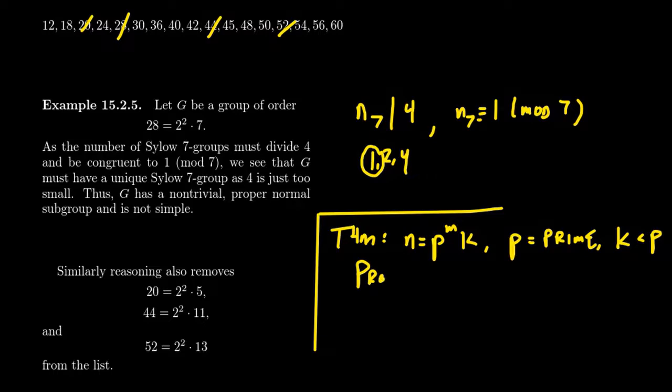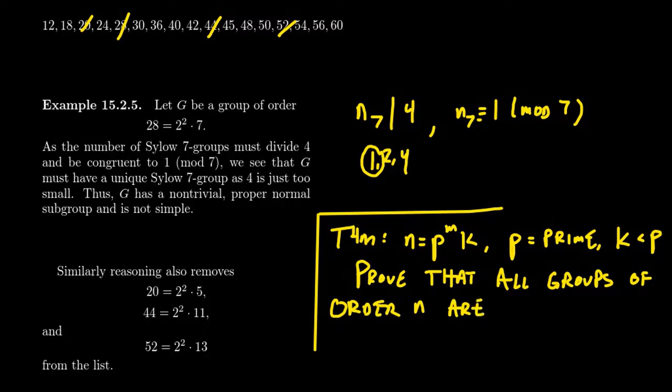kind of mimicking what we're doing right here, prove that all groups of order n are in fact not simple.